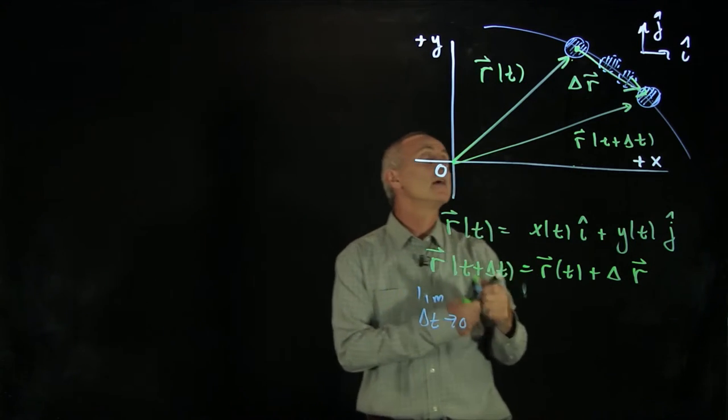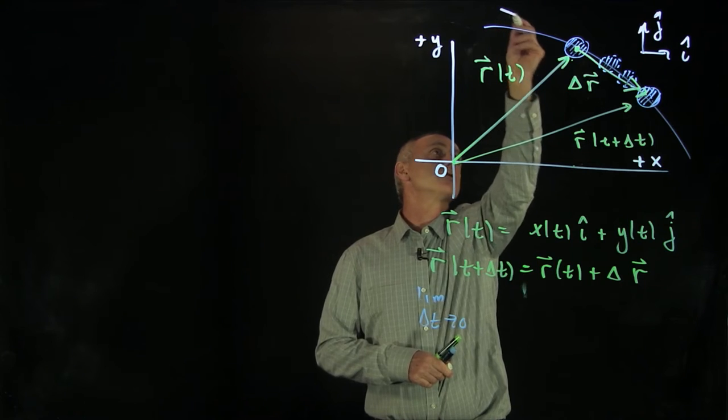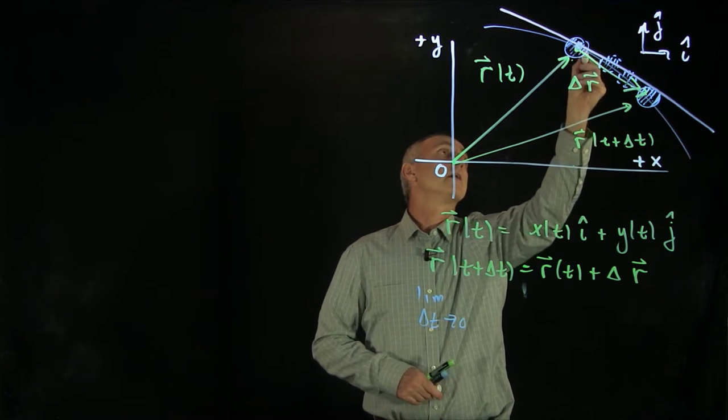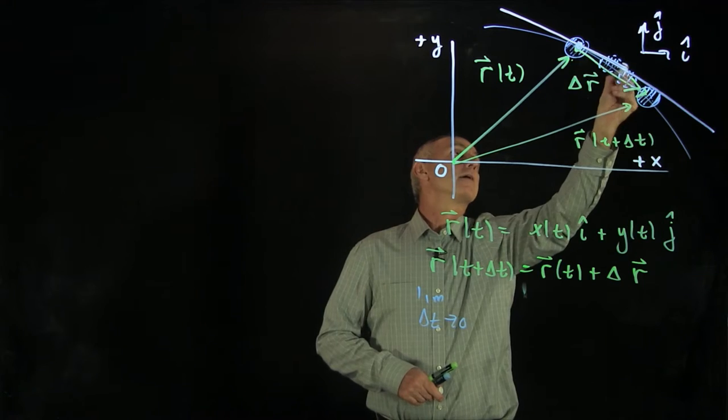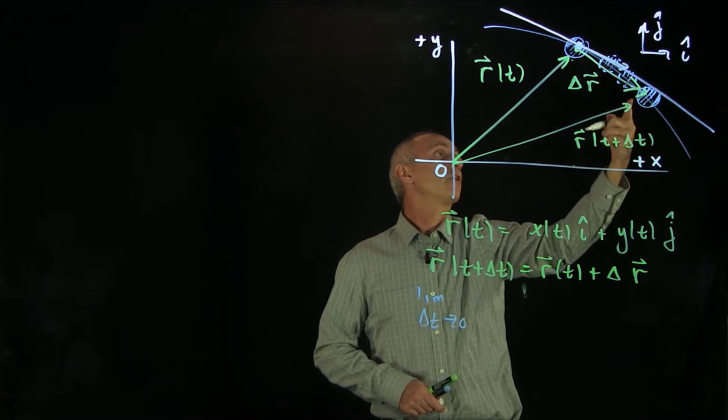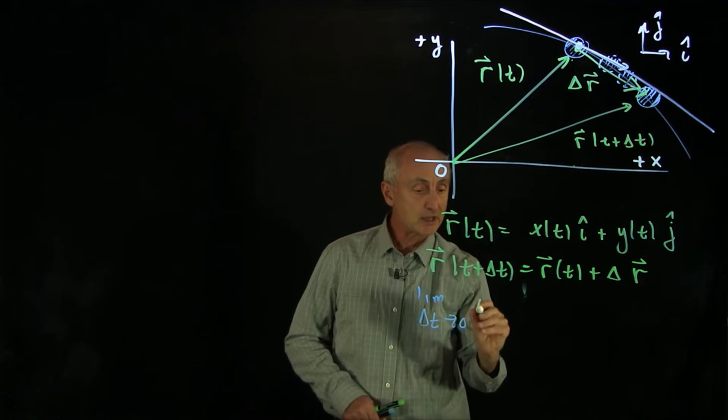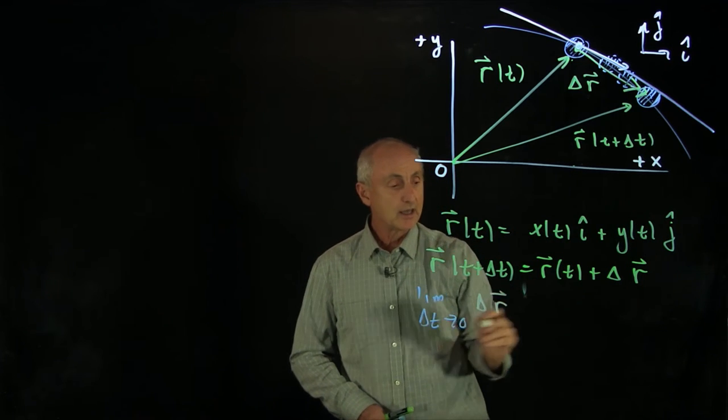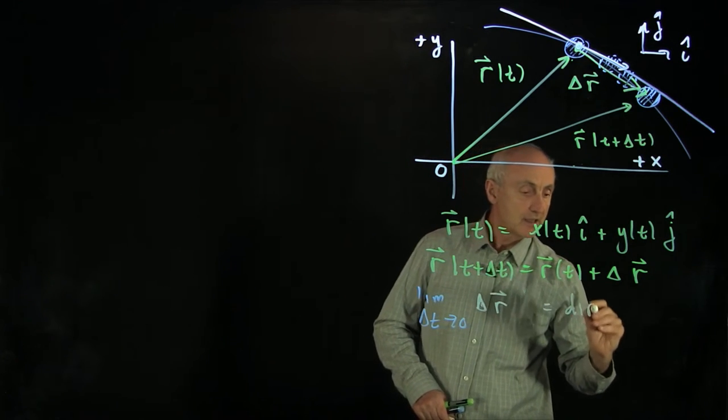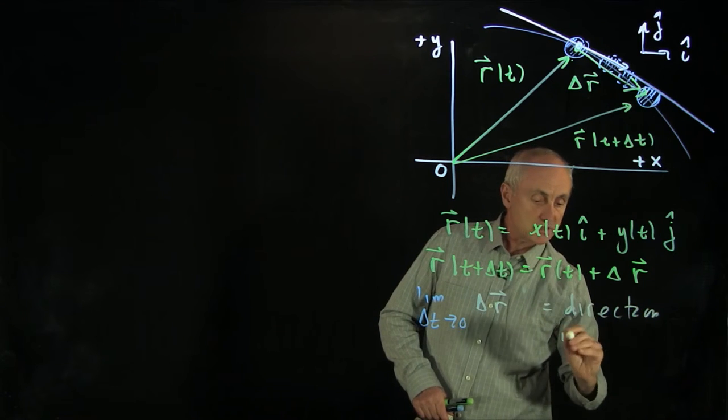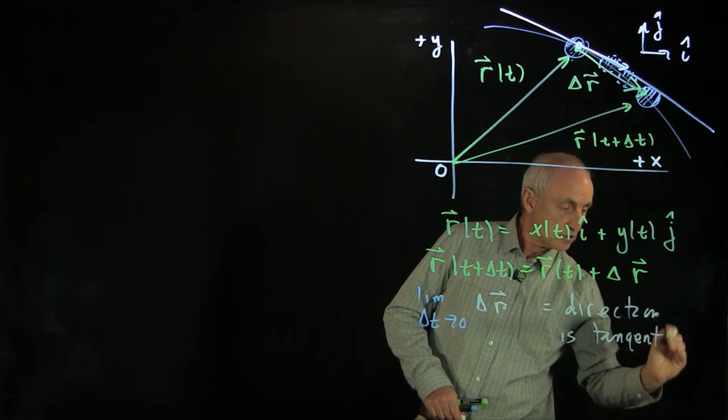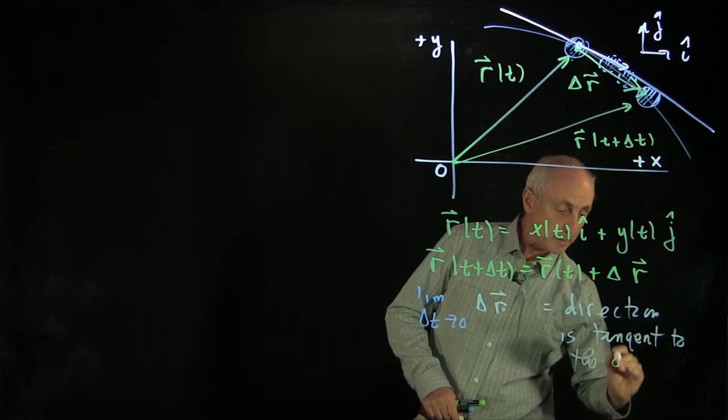The key fact is that if we drew a tangent to the orbit, then the limit of delta r is approaching tangent to the curve. So in the limit, delta r, the direction is tangent to the orbit.